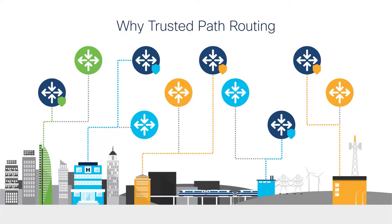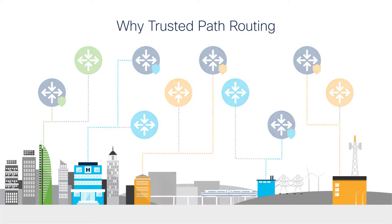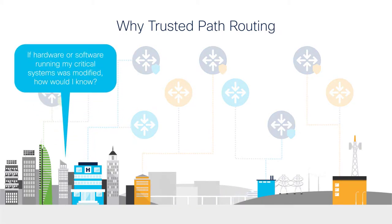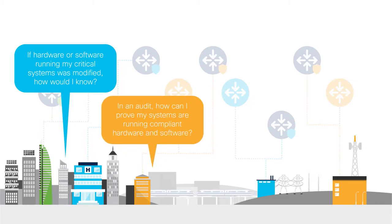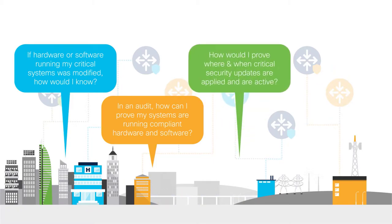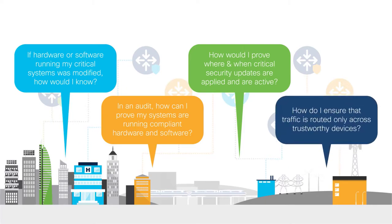A few questions to ask yourself include: If hardware or software running my critical systems was modified, how would I know? In an audit, how can I prove my systems are running compliant hardware and software? How would I prove where and when critical security updates are applied and are active? How do I ensure that traffic is routed only across trustworthy devices?